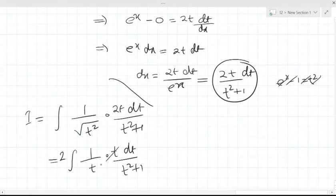t cancel, integration of 1 by t square plus 1 is tan inverse t plus c. Now value of t is 2 tan inverse value of t is root over e to the power x minus 1 plus c.